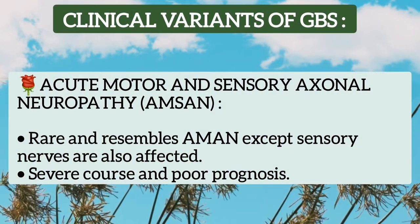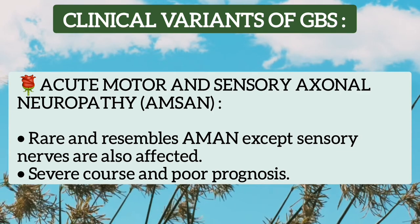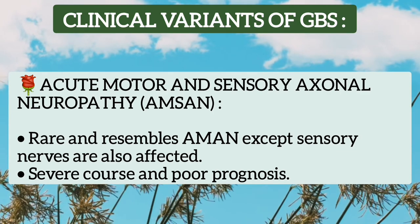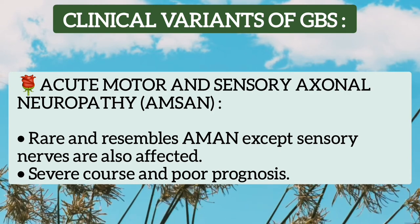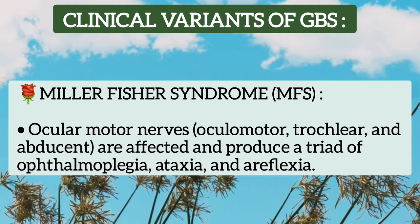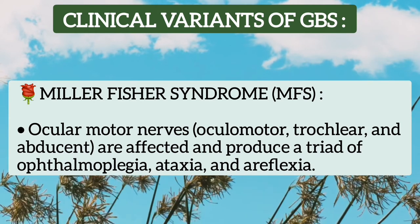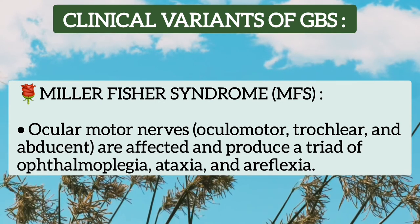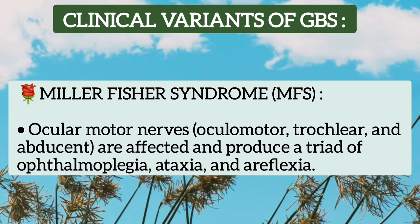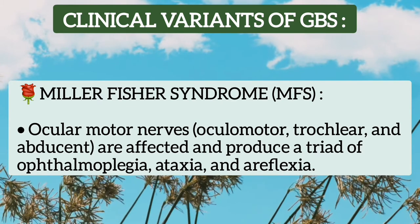The third type is acute motor and sensory axonal neuropathy, in which axonal degeneration occurs in both motor and sensory nerves. However, the course is severe and there is poor prognosis. The fourth important clinical variant is Miller-Fisher syndrome, in which the ocular motor nerves — oculomotor, trochlear, and abducens — are affected. These produce a triad of ophthalmoplegia, ataxia, and areflexia.